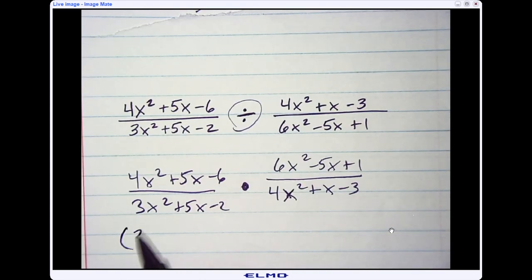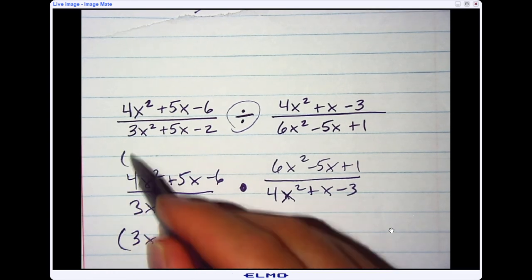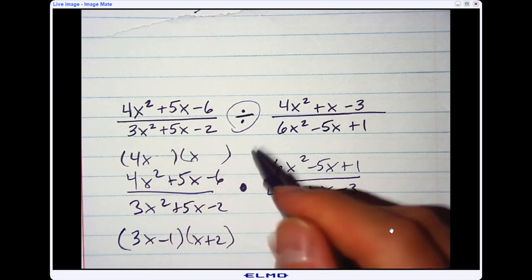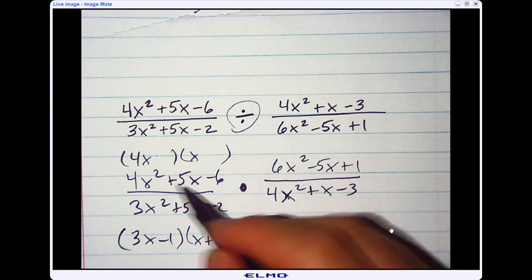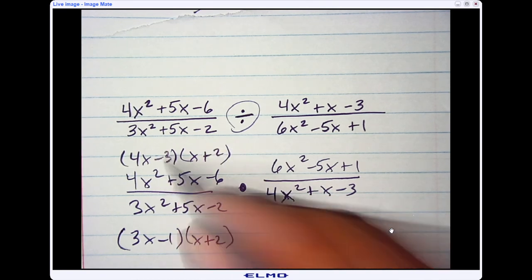So this one's going to be 3x and x. And then I have plus 2 and minus 1. When I factor this one, it's going to be 4x and x. And now I have to create positive 5, so this would have to be plus 2, and this is the minus 3.